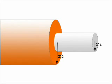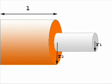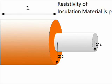Consider a single core cable of conductor radius R1, internal sheath radius R2, length L, and resistivity of insulation material is Rho.